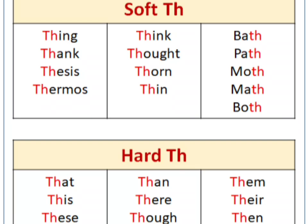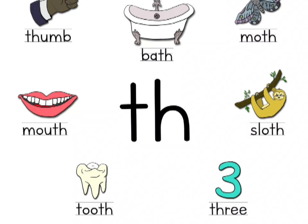In some words, TH will say the soft TH sound, and in others it will say the hard TH sound, so we need to be careful when reading. Let's see a few words with TH: thumb — where TH is at the start — bath — where TH is at the end. So it can be at the beginning or the end. Mouth, touch, three. These are the soft TH sounds. TH, TH, TH.